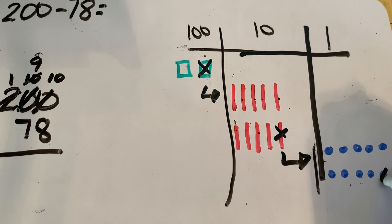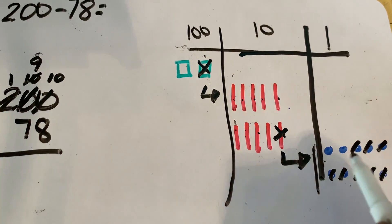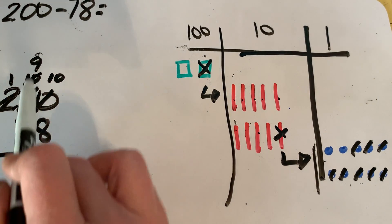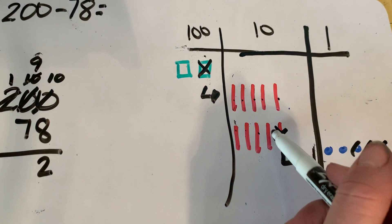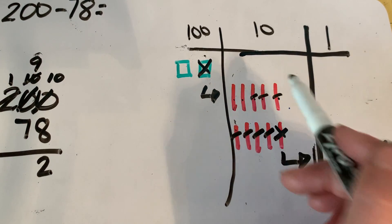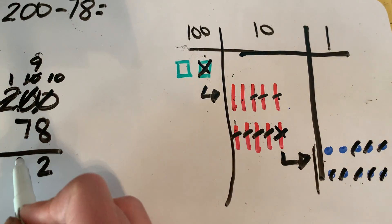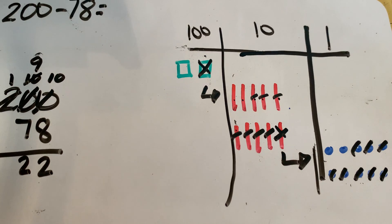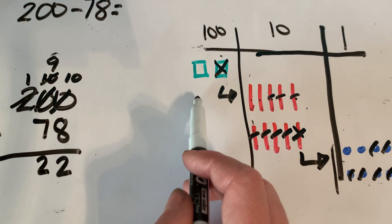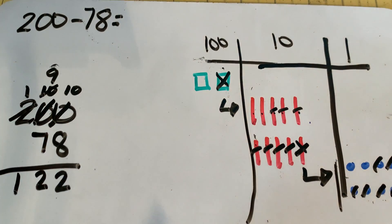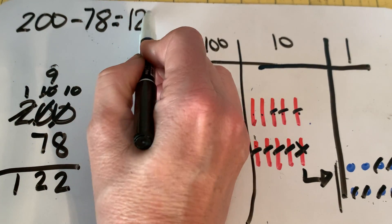We're going to take off our eight ones: one, two, three, four, five, six, seven, eight. So ten minus eight leaves us with two. We have seven tens to subtract, and we've got nine, so we can do it. Nine tens minus seven tens leaves us with two. We still have one hundred left here and we're not subtracting anything from it, so we keep that one hundred. So two hundred minus seventy-eight is one hundred twenty-two.